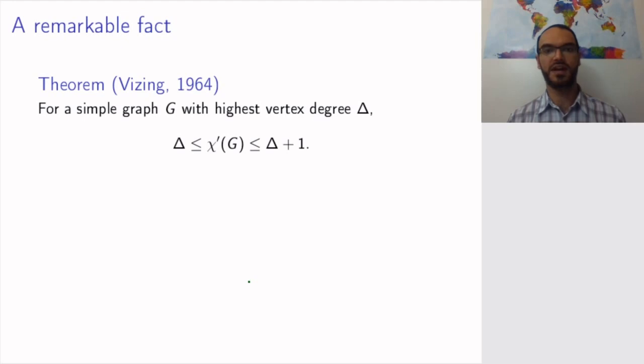So for a simple graph where the highest vertex degree is Δ, then χ'(G) is either equal to Δ or at the worst it's equal to Δ+1. So at most we will need one color more than the degree of the highest vertex. This was proved by Vizing in 1964. The proof of this theorem is outside the scope of this course so we will not deal with it specifically.